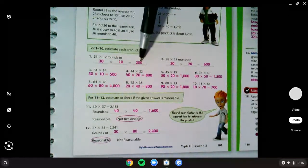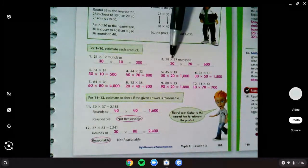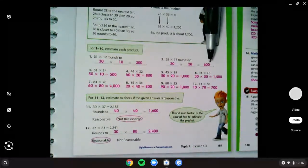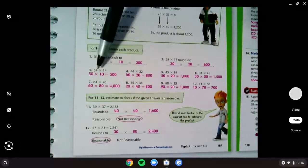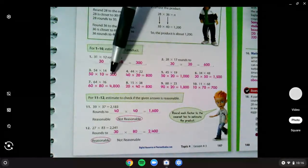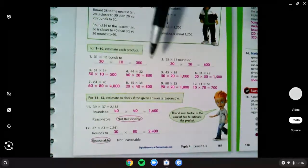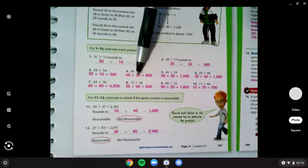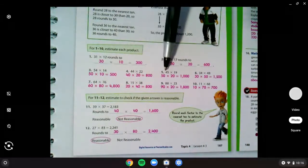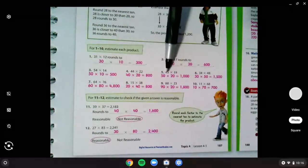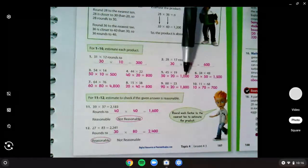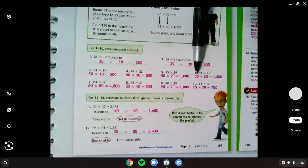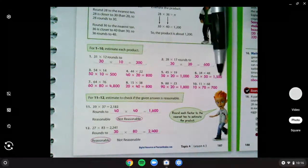and that would equal 300. Number 2, you need to round up to 30 and up to 20, multiplying together to get 600. 3, you should have rounded to 50 and to 10 to get 500. 4, you should have rounded down to 40 times down to 20 is 800. 5, you should have rounded up to 50 and up to 20 for 1000. And 6, you should have rounded down to 30 and up to 50 for 1500.